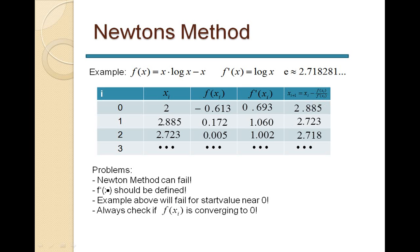Both f(x) and f'(x) must be defined at your point. To check convergence, look at the function value column — if the values are not tending to zero, the algorithm is not converging. The function values will just fluctuate or go to infinity. Always monitor whether your function values are actually tending toward zero as you iterate.